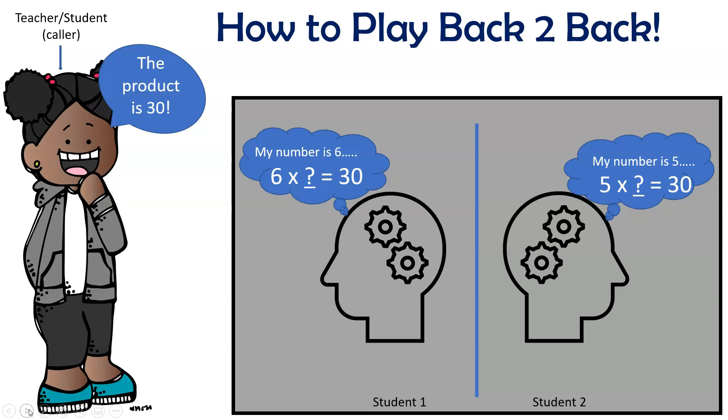For example, students can think in terms of trying to find the missing factor. Student 1 wrote a 6, so think to themselves, 6 times what number equals 30. Student 2 wrote the number 5, thinking 5 times what number gives them 30. If students know their facts, then they'll be able to easily and quickly call out the numbers. However, this game does not require them to have memorized their facts. Hopefully, as they play, they'll become more proficient and they will end up memorizing their facts.